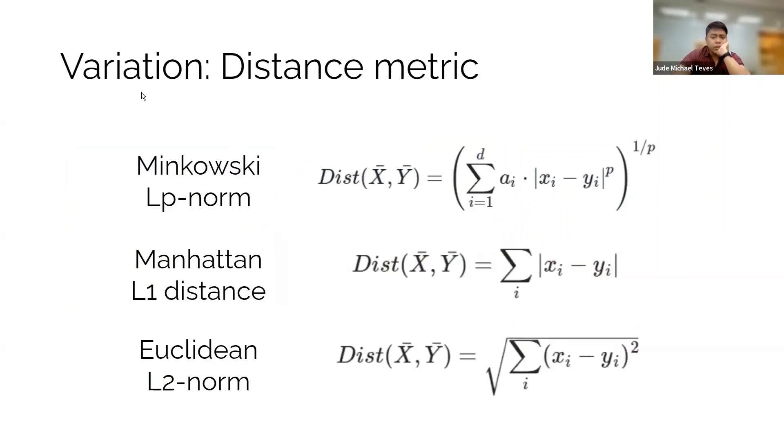So the more general form is the Minkowski distance. The order is a variable, Lp-norm. Manhattan and Euclidean distances are just special cases of the Minkowski distance. In Manhattan, you just have one. In Euclidean, the order is two. This is the general equation.